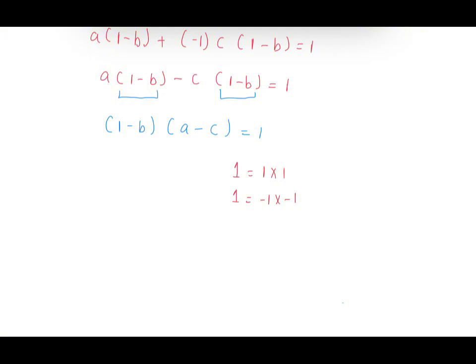Using 1 times 1, we'll have 1 minus b equals 1 and a minus c equals 1. When we solve, we'll find that b equals 0, a equals 2021, and c equals 2020.